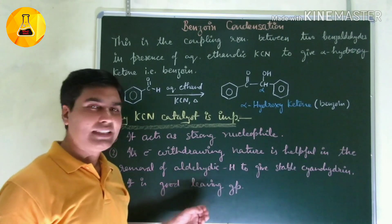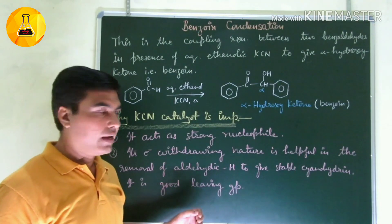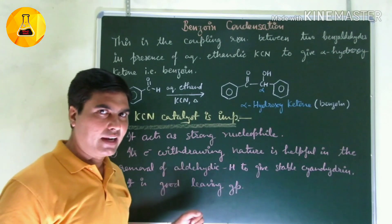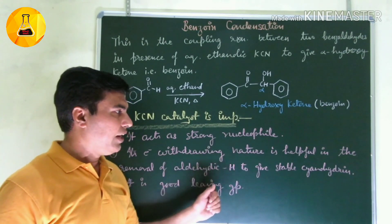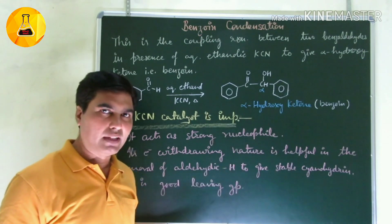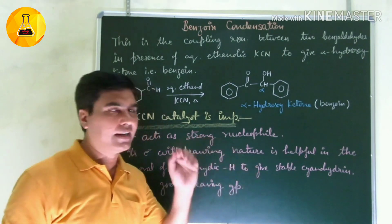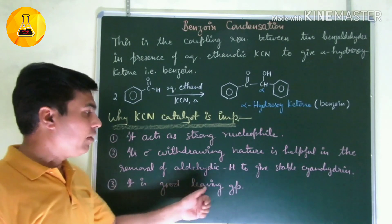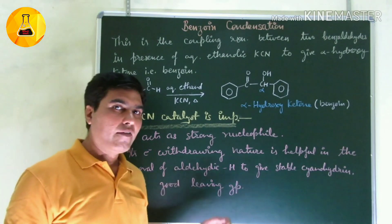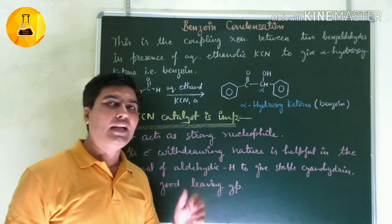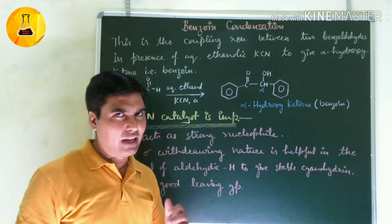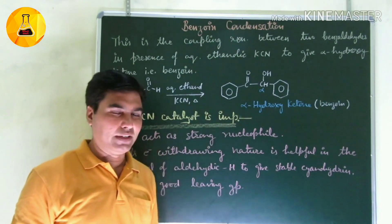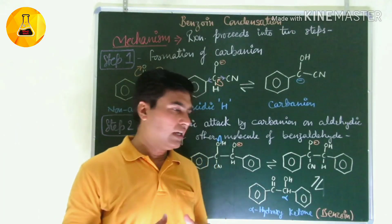CN- is a strong nucleophile and attacks the aldehyde carbon. After this attack, a stable cyanohydrin is formed and the reaction proceeds further. Third, CN- is a good leaving group — it is easily and quickly removed to give the final product benzoin. Now let's discuss the mechanism of how two benzaldehyde molecules combine to form benzoin.